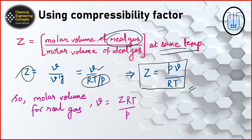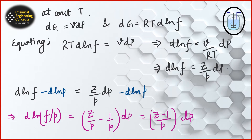The use of this compressibility factor is to determine the real volume of the gas when we know terms related to the ideal gas. When RT/P and the Z value are known, I can calculate the volume of the real gas from the volume of the ideal gas.